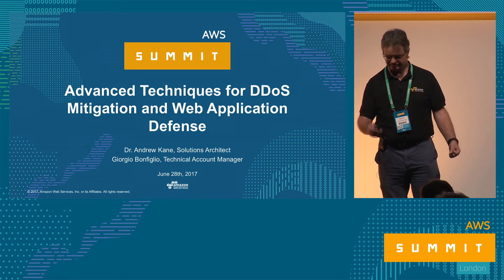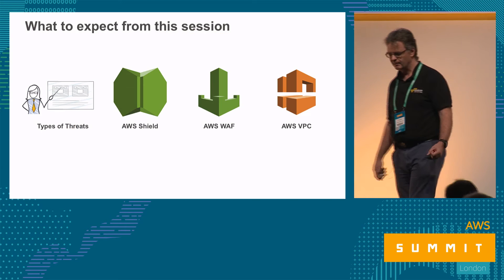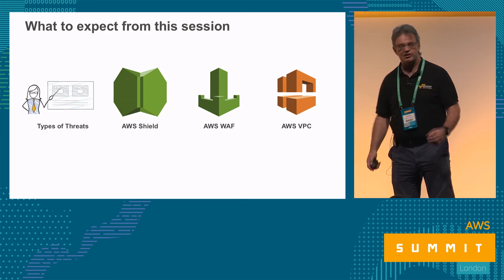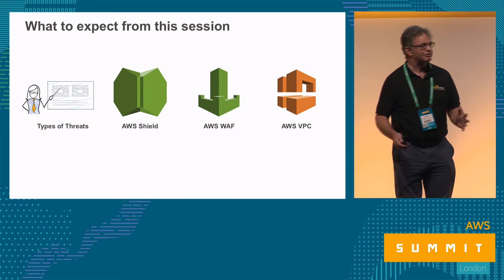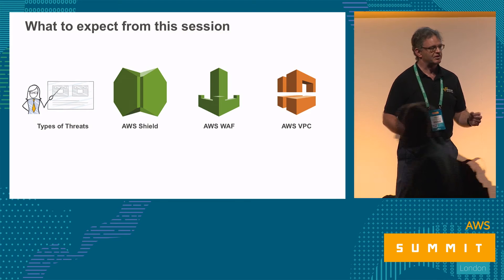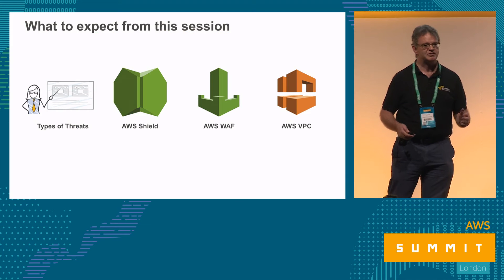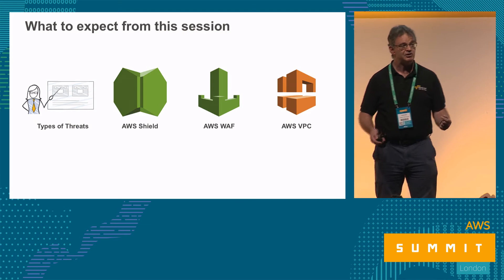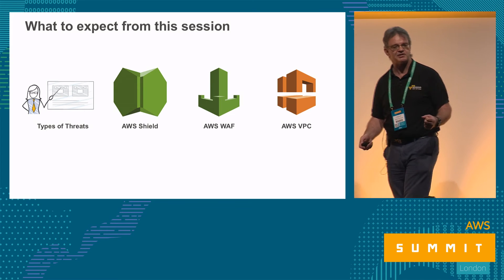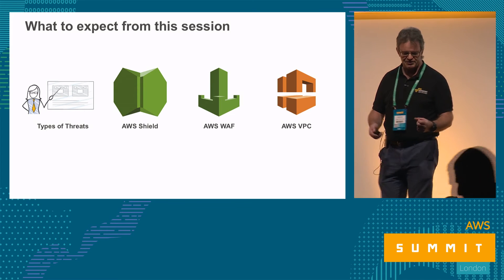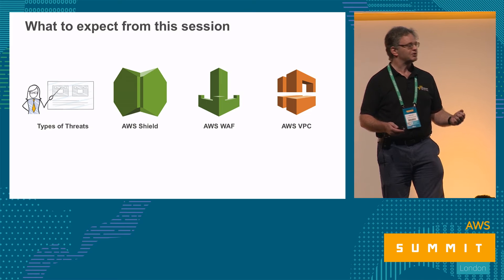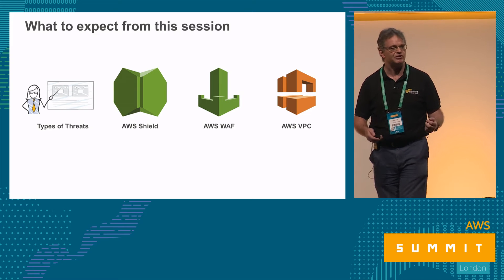For protection at the layer 7 application level, AWS provides a Web Application Firewall — a WAF. We're going to talk about really three major services at AWS that customers use to mitigate against these threats. Before we start on those, I'll hand over to Giorgio to talk about the threats that customers are actually seeing.